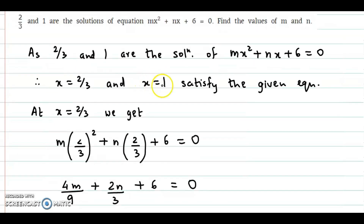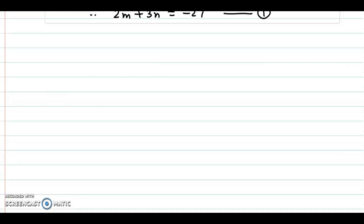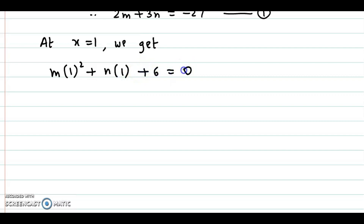Now we have the second value x equal to 1. We substitute into the equation mx squared plus nx plus 6 equal to 0. At x equal to 1, we get m into 1 squared plus n into 1 plus 6 equal to 0. Since 1 squared is 1, this gives m plus n plus 6 equal to 0, or m plus n equal to minus 6. This is equation number 2.